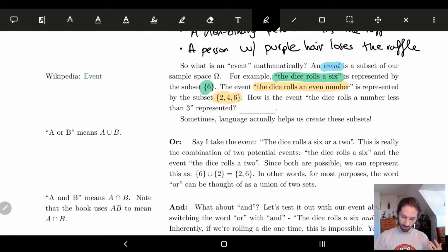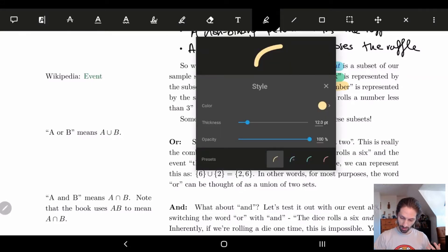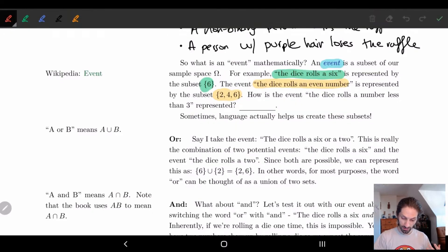How about the dice rolls a number less than three? Well, let's see. So this should be one is less than three, two is less than three, and that's it, right? Three is equal to three, four, five, six are all greater than three. So we chuck them out, and we're left with just one and two. And that gives us the thing.